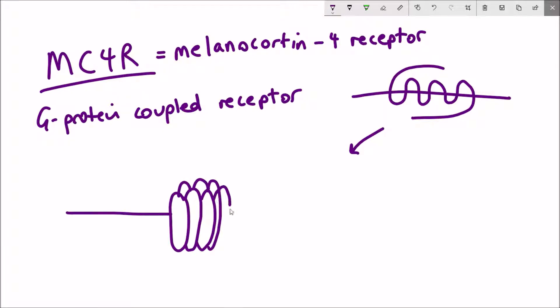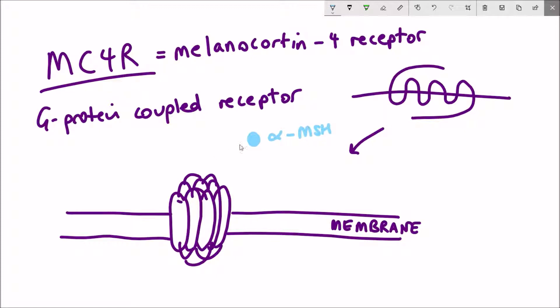It looks better in my second sketch. The key thing is these are receptors at the membrane. Alpha MSH can come and interact with the receptor and that interaction activates the downstream signaling of this receptor. And what is the response? It's the prevention of food intake and promotion of energy expenditure.